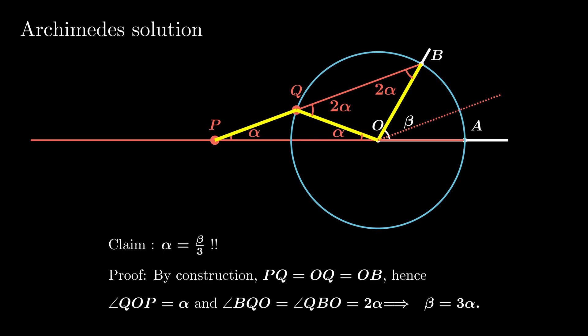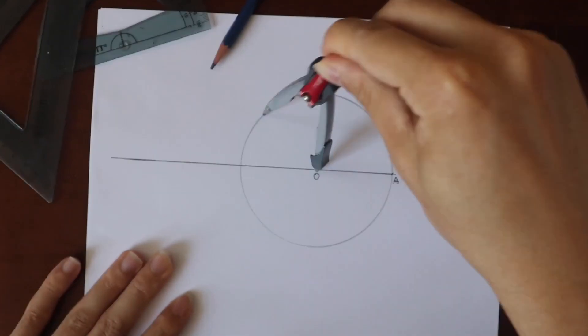So it all looks good in theory. Let me do a demo myself to show how to do it in practice. In this demo, I'm going to trisect a 60-degree angle.